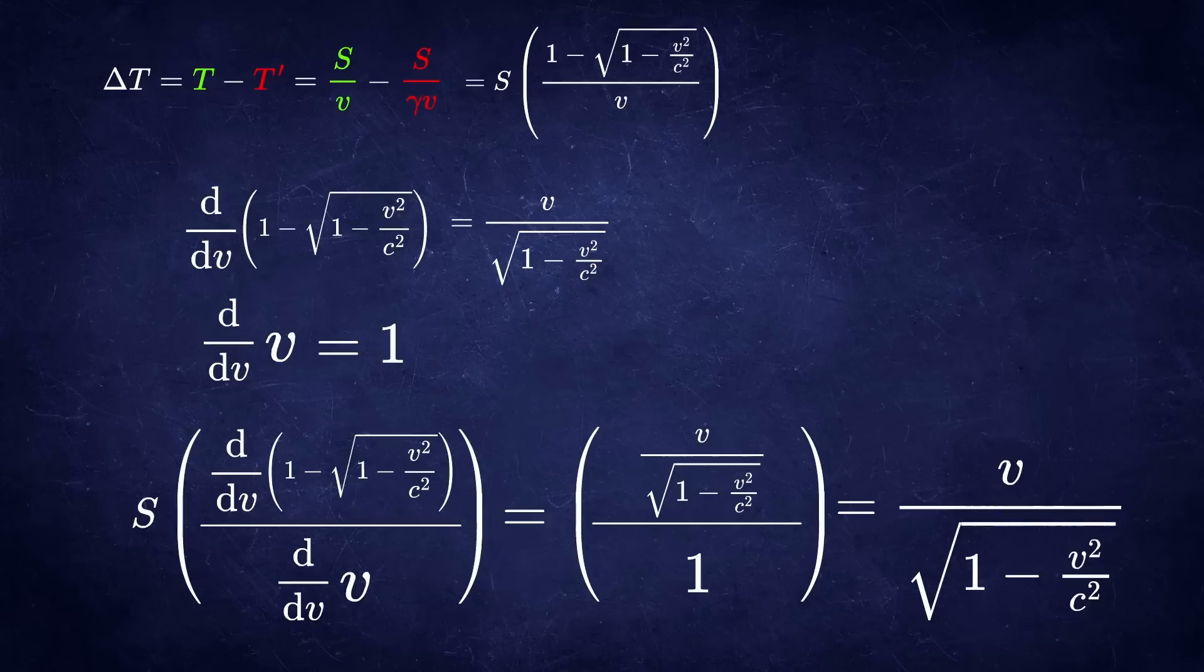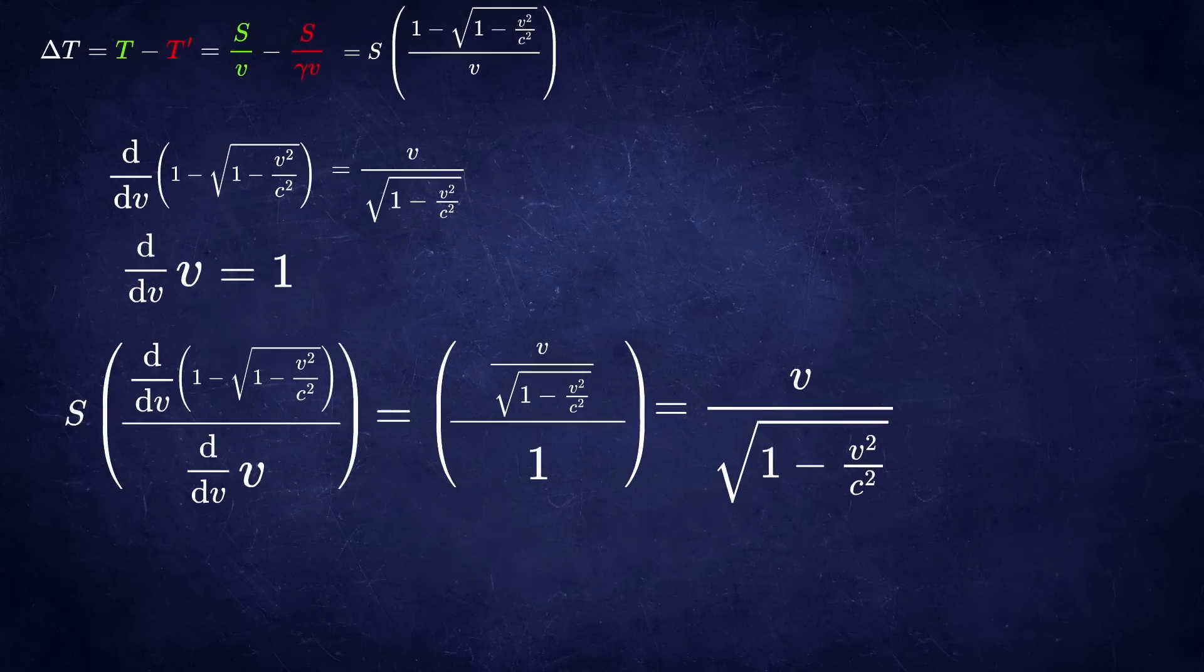If you do this, you will eventually end up with an expression that looks like this. And now if you take the limit as velocity goes to 0, you get 0 over 1, which is 0. So let's make some realistic examples so that all of this is not so abstract.